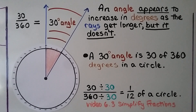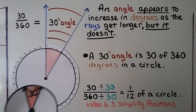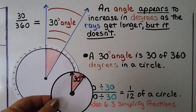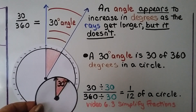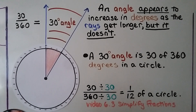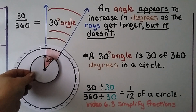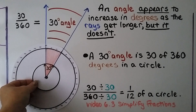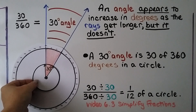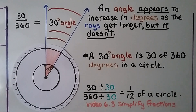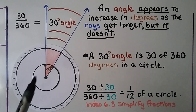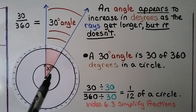We can take a little tiny circle with a 30 degree angle and put it right on here, and see it doesn't matter how small the circle is — 30 degrees is 30 degrees.